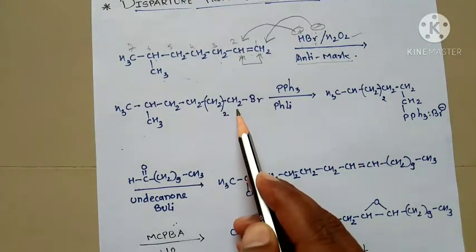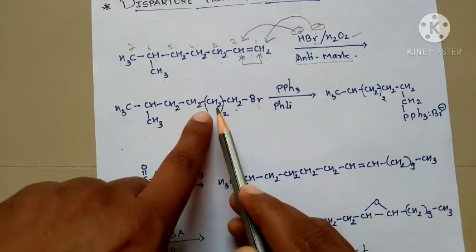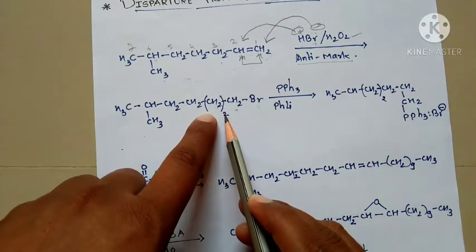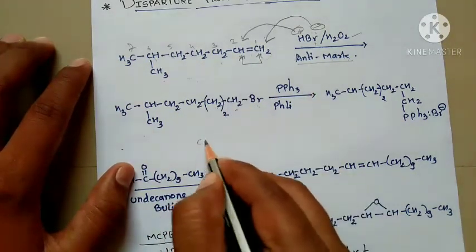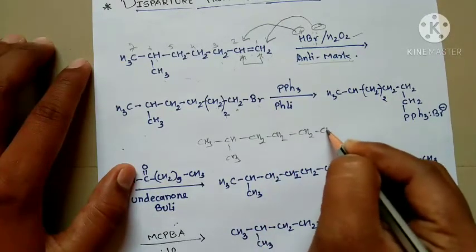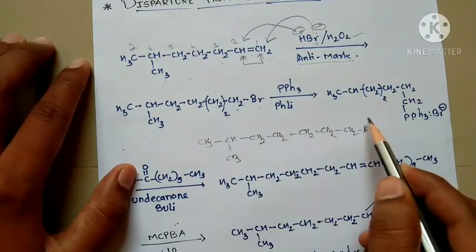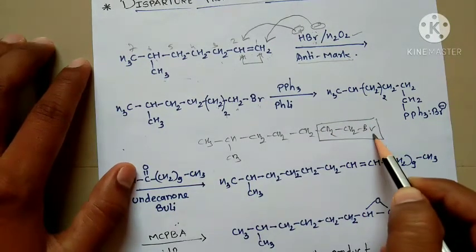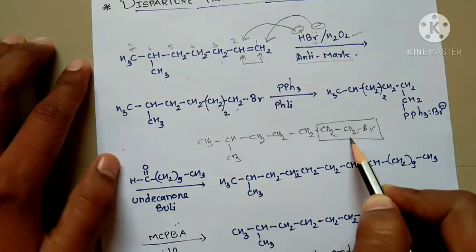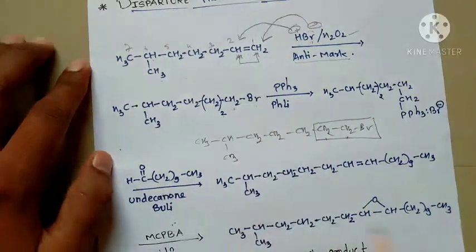You get the anti-Markovnikov addition product: CH₂ with Br attached to the first carbon, and the alkyl group attached to hydrogen at the second carbon. Written in condensed formula: CH₃-CH(CH₃)-CH₂-CH₂-CH₂-CH₂-CH₂Br — seven carbon atoms. The negative part (Br) is attached to the first carbon which has the higher number of hydrogens, and hydrogen is attached to the second carbon.